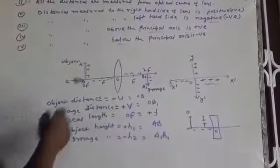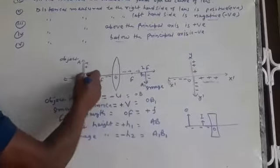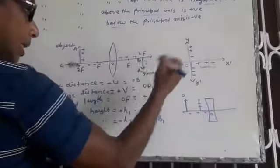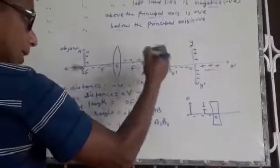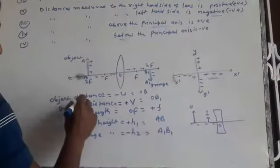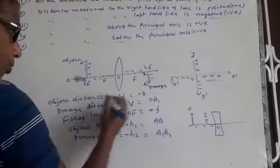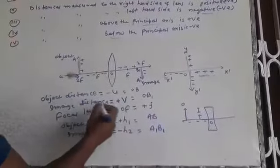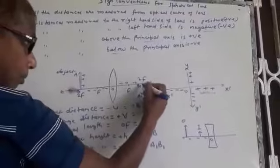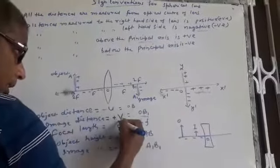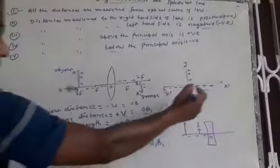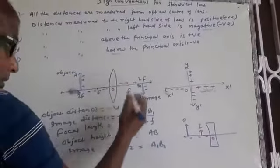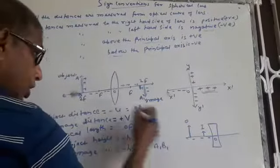I have mentioned here an object AB placed at the center of curvature, whose image forms on the other side of the convex lens at a distance of 12. Object distance, minus u, that is OB, is negative — left hand side. Image distance, that is OB1, is positive — right hand side. See the graph here: focal length OF is on the right hand side, so it is positive for a convex lens.